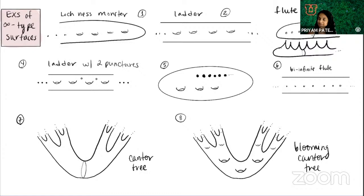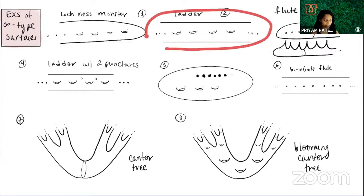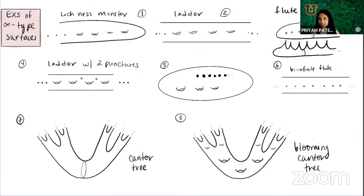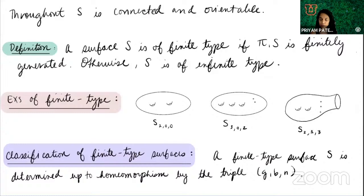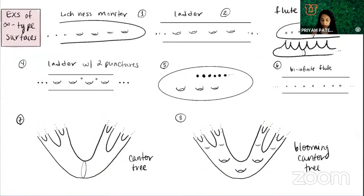Infinite type surfaces arise naturally in many contexts — connections to quasiconformal maps, and they arise as covers of finite type surfaces, so they come up very naturally. But they are far less studied than finite type surfaces. Let's talk a little more about formalizing infinite type surfaces. I keep talking about going off to infinity, and that's clearly not a rigorous math way of talking — what I'm really talking about is the ends of the surface.